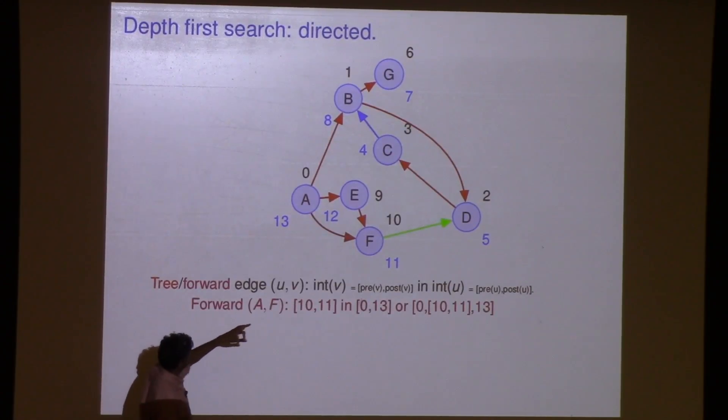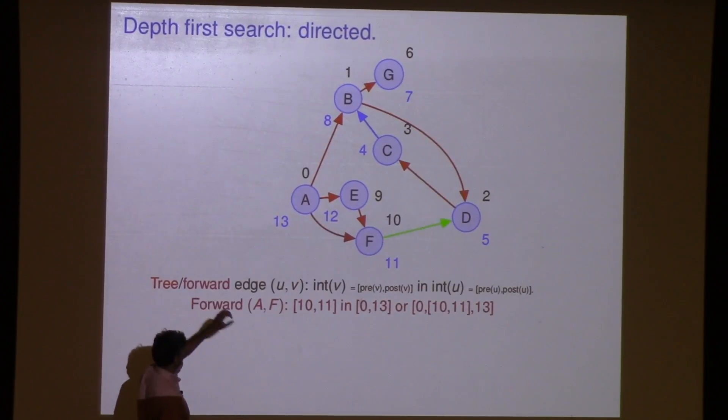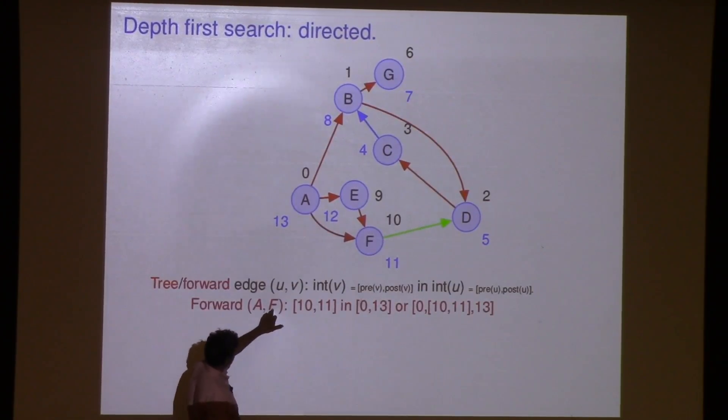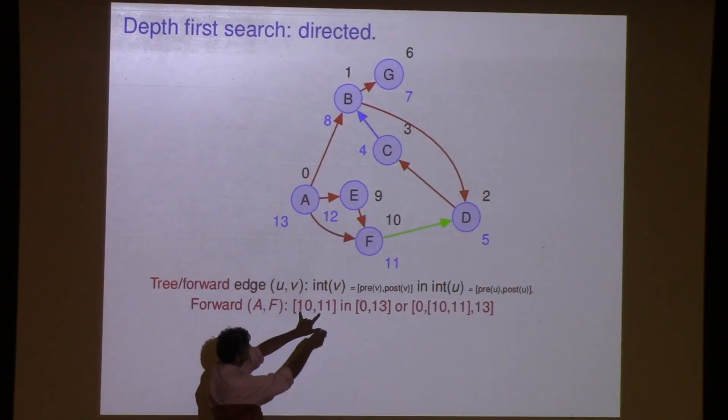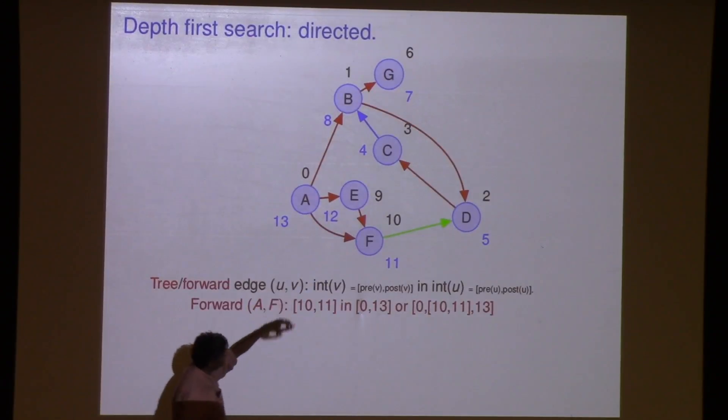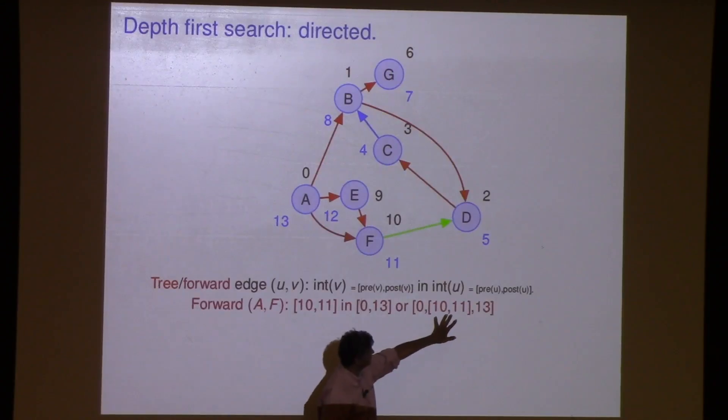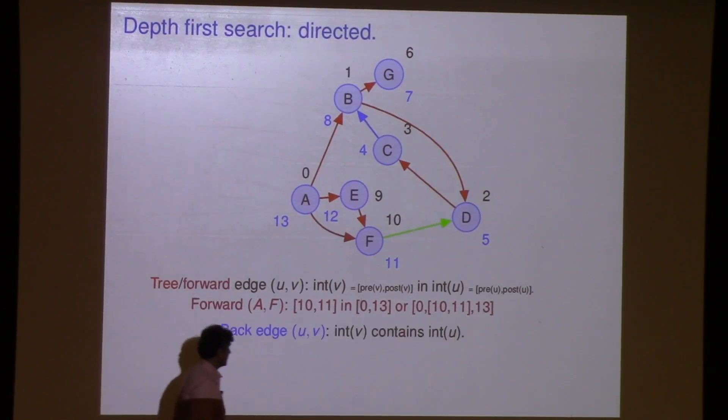So in this case, the pre and post for F is 10, 11, right? 10, 11. And it's inside the interval of 0 to 13. A was on the stack for the entire period, 0 to 13. So F was being explored while A was on the stack. Does that make sense?